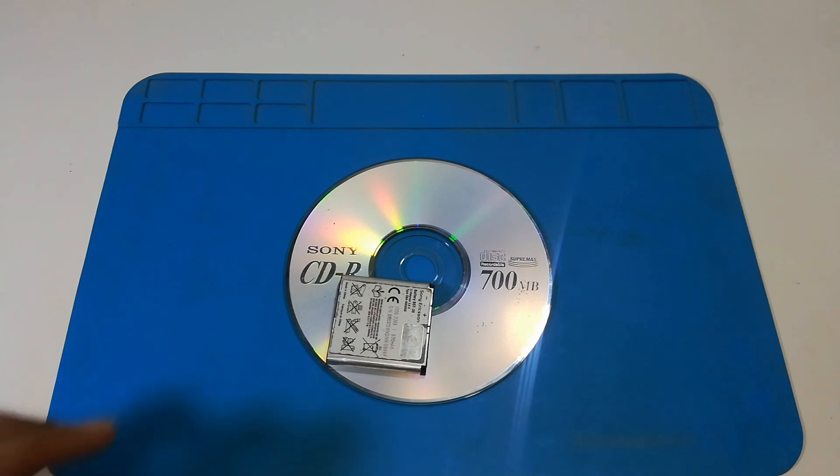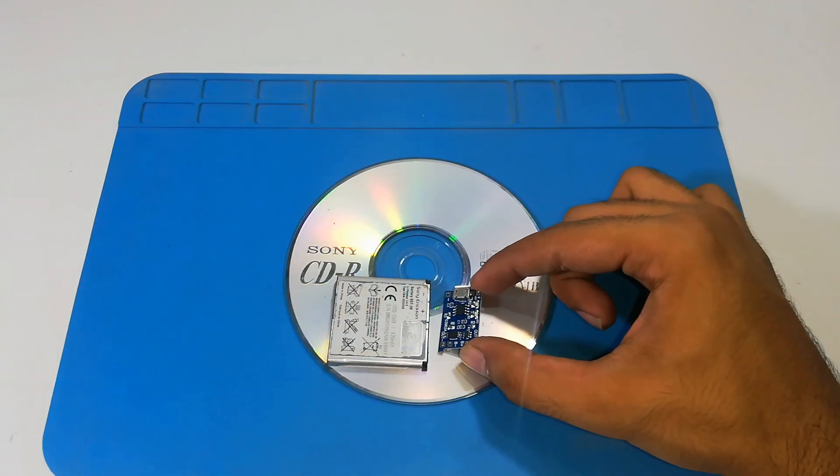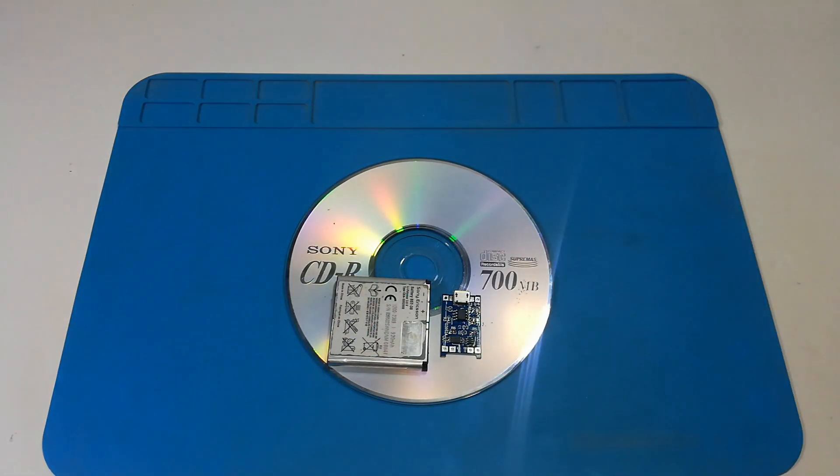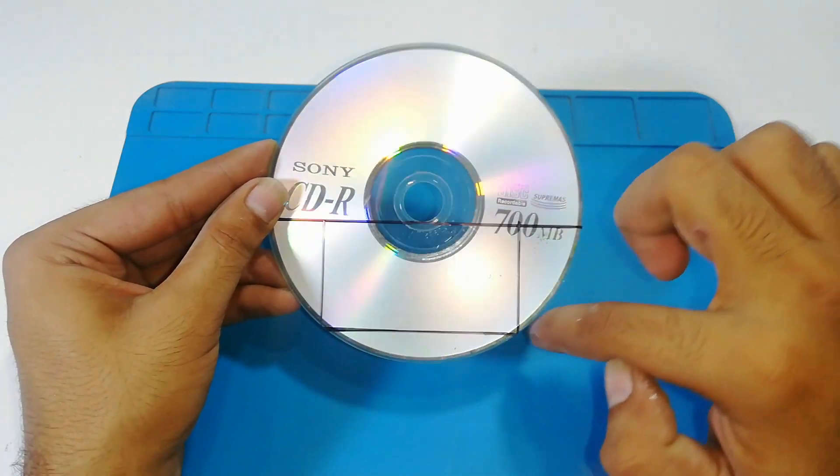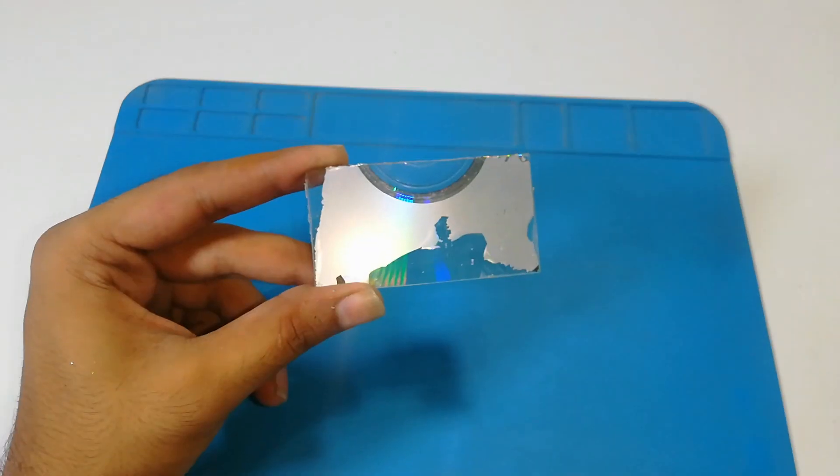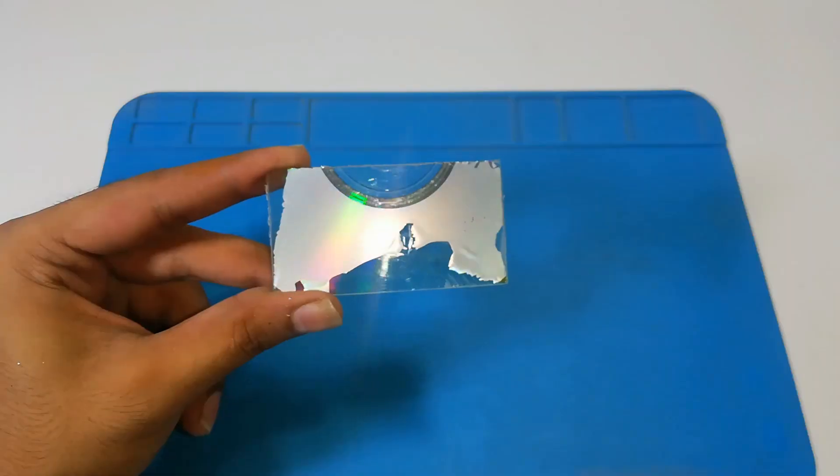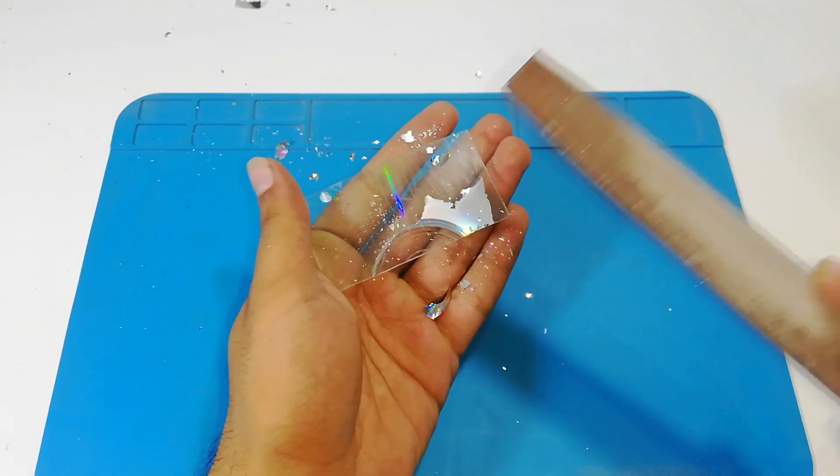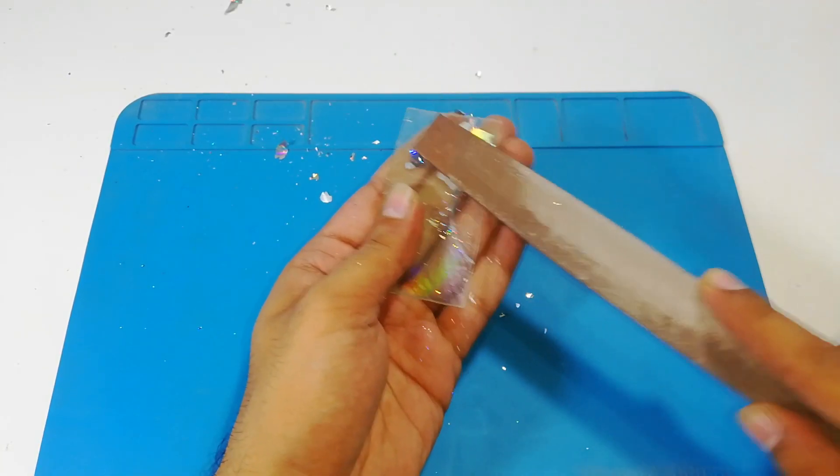First of all, mark appropriate dimensions on the CD which fits both the battery and the charging module. Cut the required piece with the help of a hacksaw. You can file it to remove the shiny coating on it. Prepare another exact piece as we need two of these in our project.